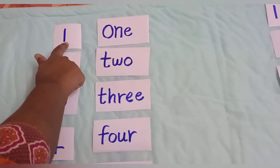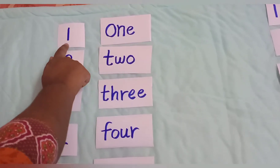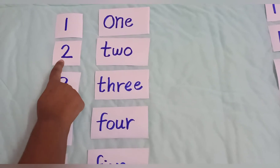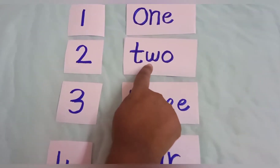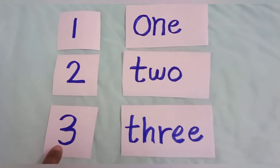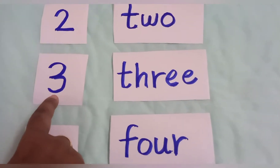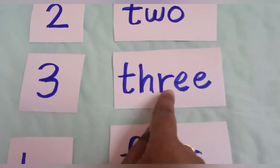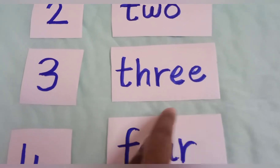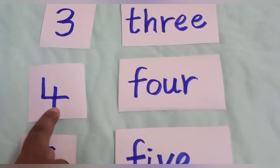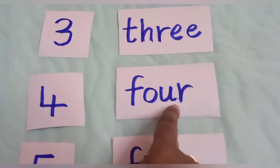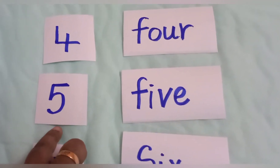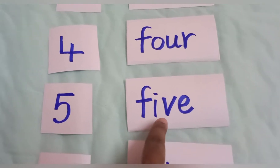What is the number name of 1? O-N-E, one. Next one is 2 — T-W-O, two. Next one is 3 — T-H-R-E-E, three. Next one is 4 — F-O-U-R, four.